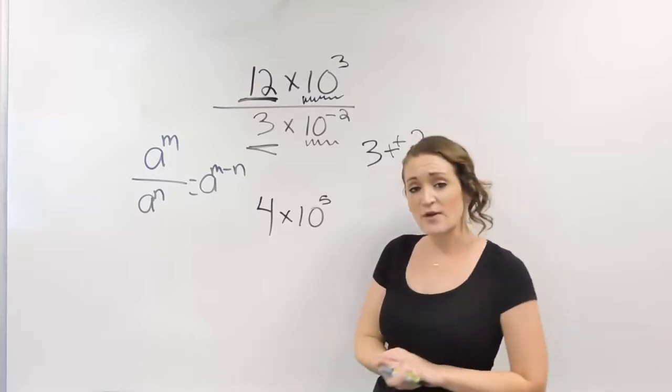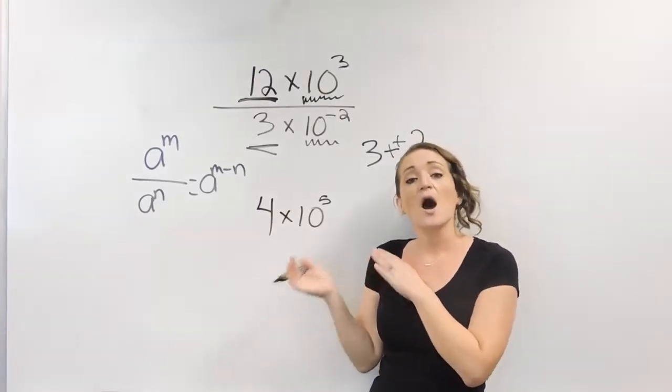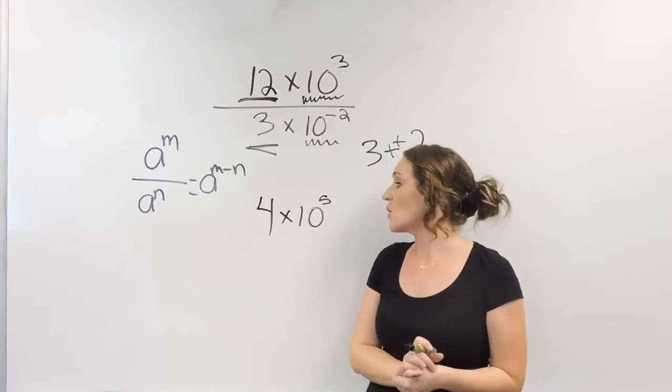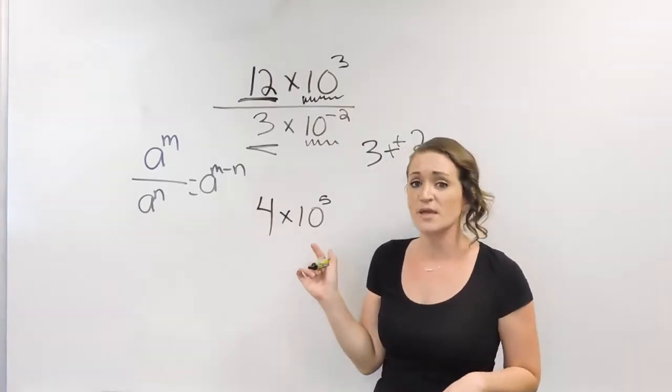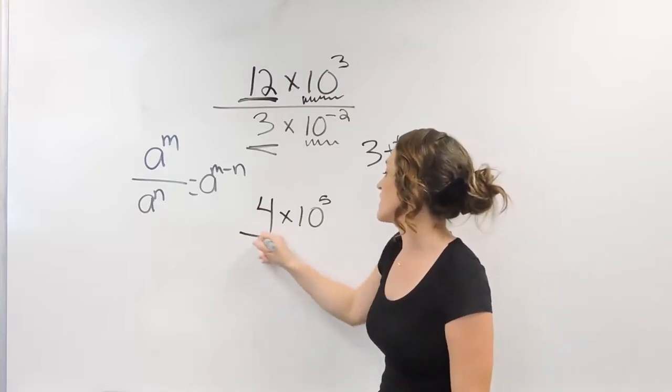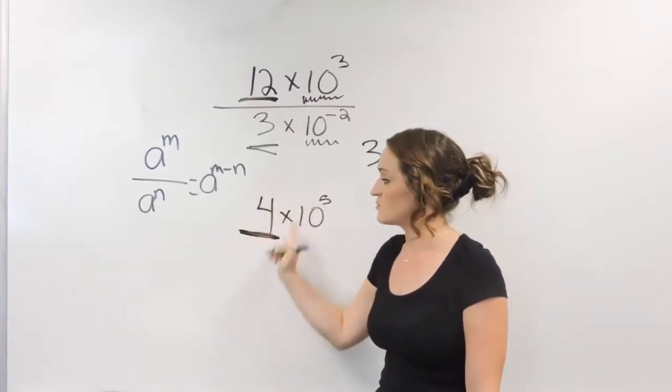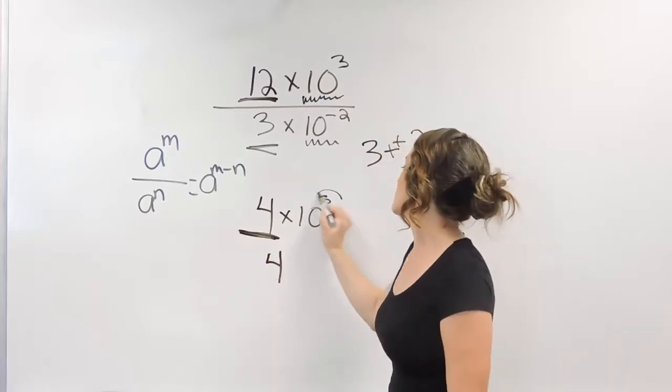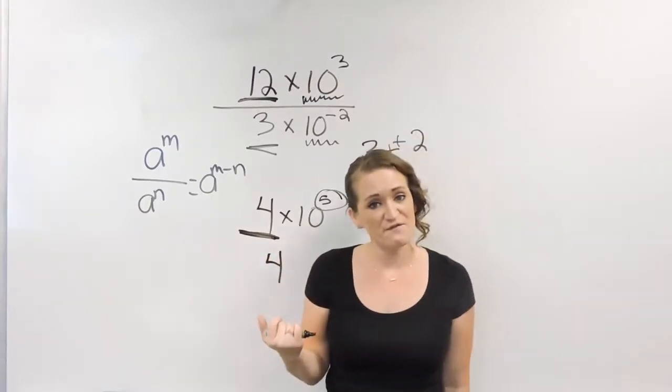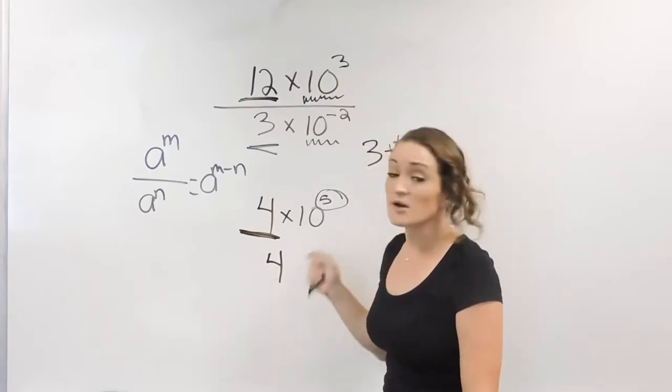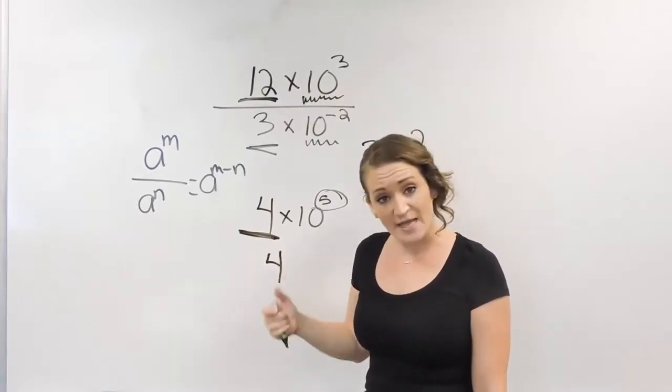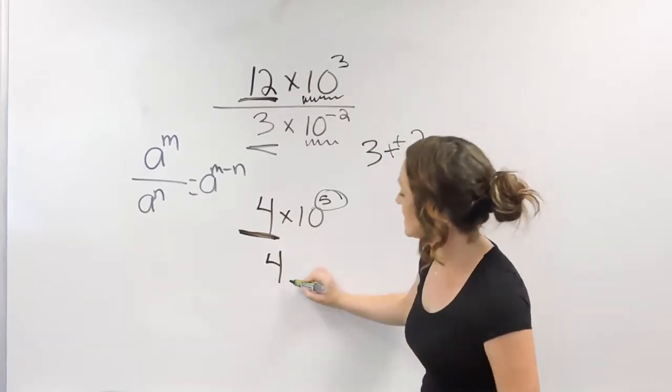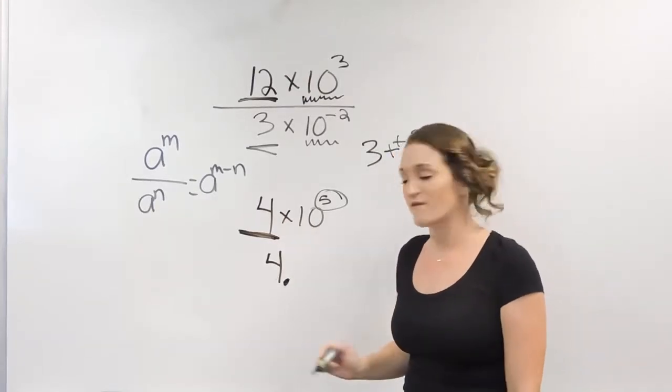Now, if we can leave our answer in scientific notation, then we're done. Otherwise, if we do need to convert it to standard form, we need to go ahead and convert this number here. The way that you convert that number is by writing down your decimal or your number that you have over here, which for us is a four. Then you look at your exponent. We have a positive five. That means we're going to take our decimal and we're going to move it five times in the positive direction, to the right. Our decimal point is understood to be to the right of that four.